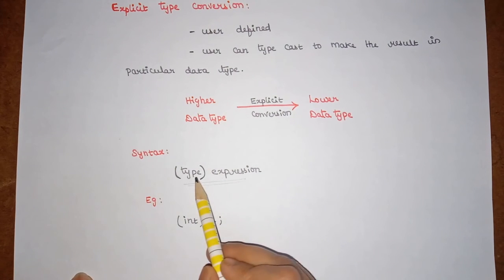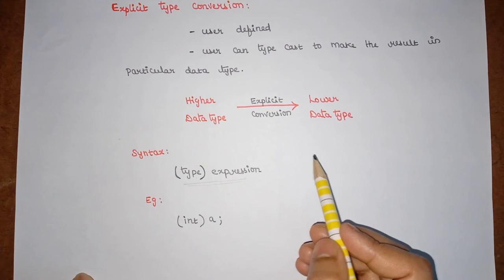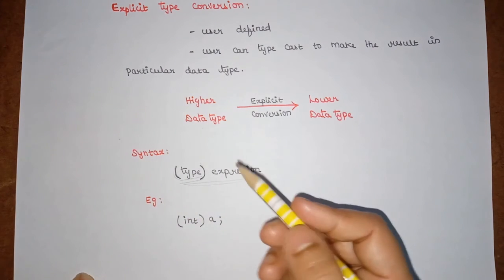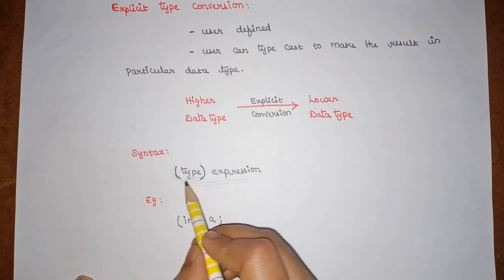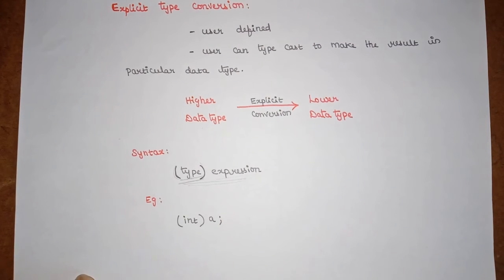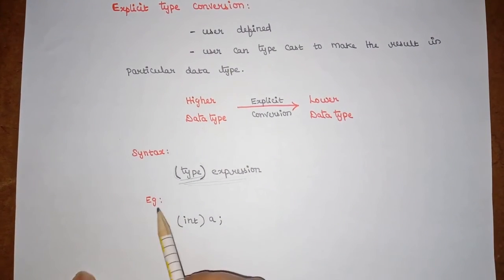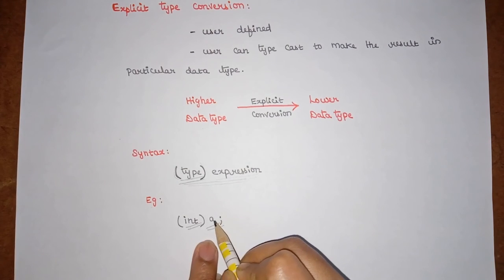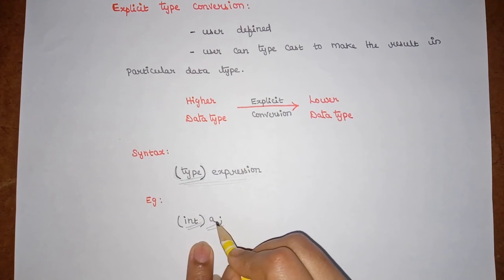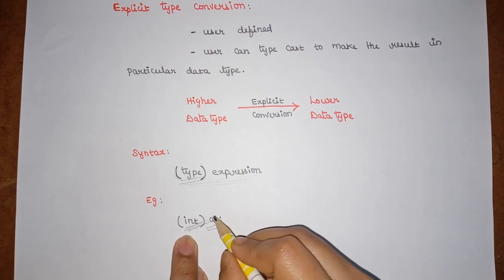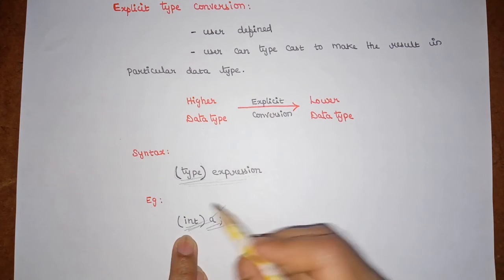So how can we convert from one data type to another data type? This is the syntax used for converting from a higher data type to a lower data type. Inside the braces, we have to give the type to which we want to convert that expression. We have to mention the data type and the expression we want to convert. For example, (int) a — here a is in some other data type and we want to convert that a into integer type, so we use this type conversion syntax. The a can be of any data type higher than integer.